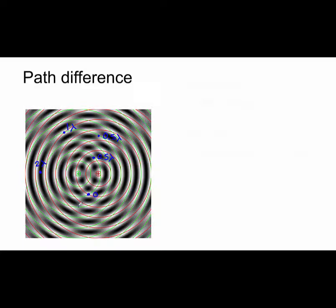Now let's look at the surface of the water at each of these points. At the points where we have whole numbers for our path difference, we either have a very bright point — representing a peak of water — or a very dark point representing a trough. In these cases, the waves have interfered constructively to make the water deeper or shallower at that point. At the points where the waves have a path difference of half a wavelength, the surface of the water is grey and flat — the two waves have cancelled each other out, interfering destructively.